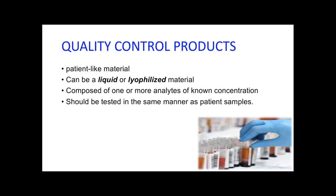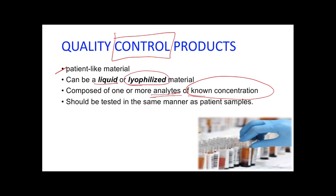A control is a substance or solution that contains an established amount of the analyte being tested — it has a known concentration. It is a patient-like material, ideally made from human serum, urine, spinal fluid, or other body fluids, and it can be liquid or lyophilized. When lyophilized, it is freeze-dried or dehydrated into powder, requiring reconstitution by adding distilled water, mixed carefully to avoid incorrect control values. It should be tested in the same manner as the patient's sample.